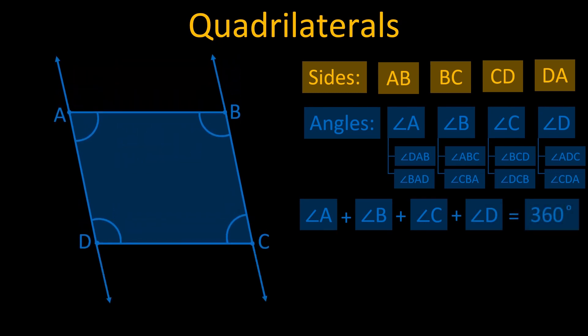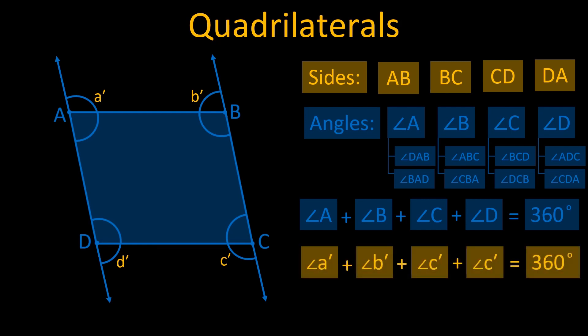If we extend the sides of a quadrilateral, it forms four exterior angles. The sum of the exterior angles of a quadrilateral is always equal to 360 degrees.